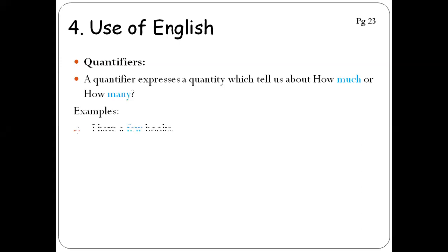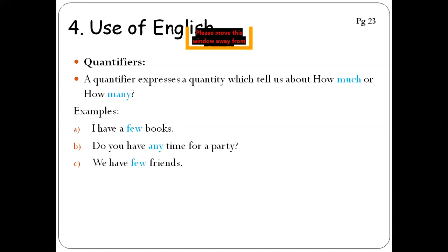Example, see. I have a few books. Number of books, we don't know. Which element is showing to us a quantifier? Few. Maybe four, five, six, we don't know exactly. How do I know how many books you have? The word few. See next. Do you have any time for a party? It's not a specific time. See next. We have few friends. Maybe your group is based on five people, or six people, maybe ten people.